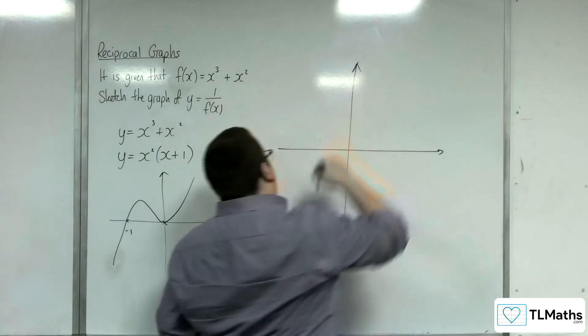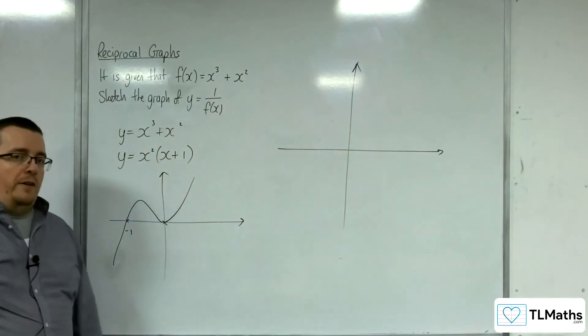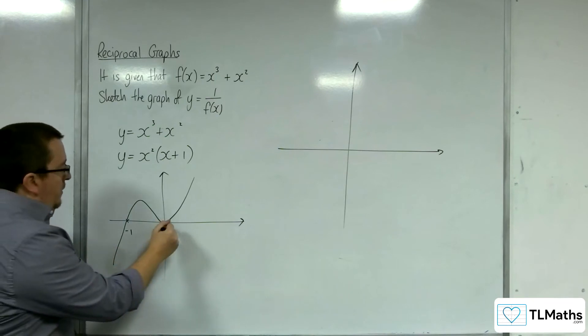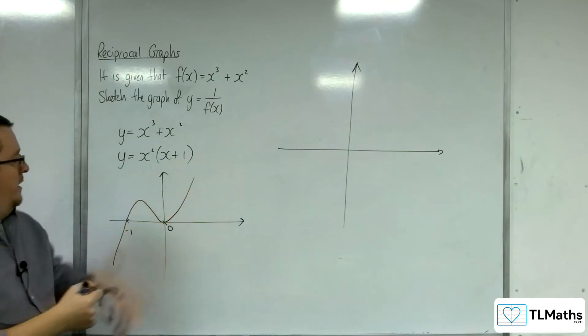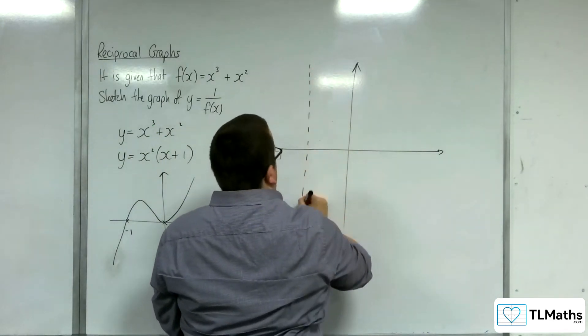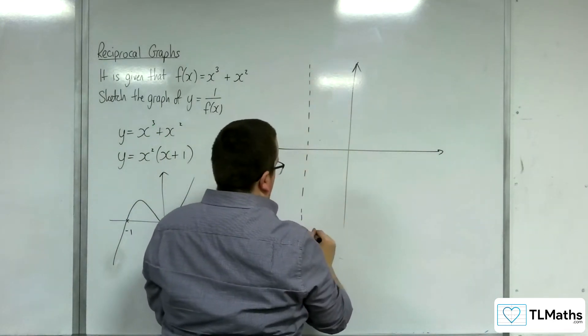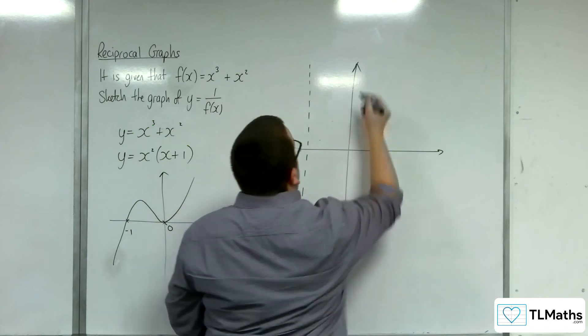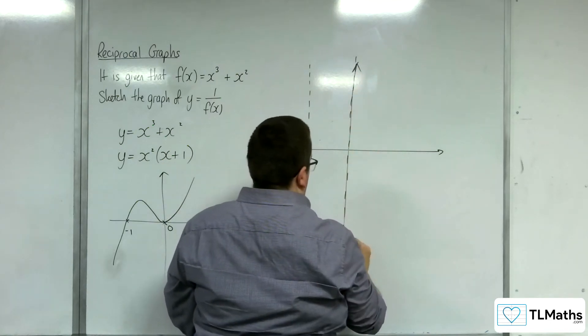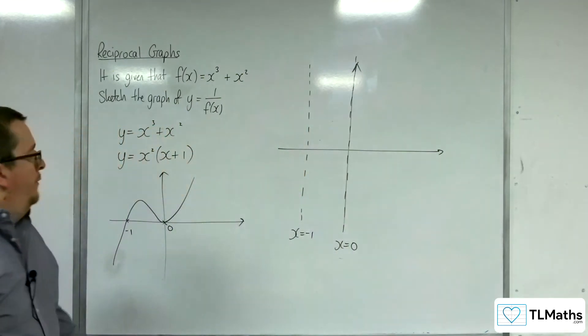Now, what will y equals 1 over f of x look like? So we know that we're going to have vertical asymptotes at minus 1 and 0. OK, so we've got those in place.